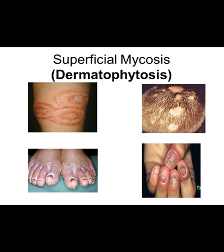Dermatophytosis is divided into tinea capitis, involving the head; tinea corporis, involving the body; onychomycosis, which is fungal infection of nails; and tinea pedis, if it involves feet. Dermatophytosis or tinea infections are included in superficial mycosis.